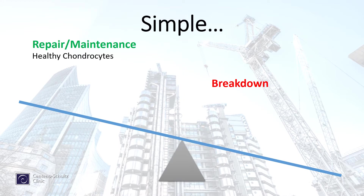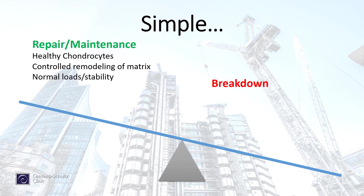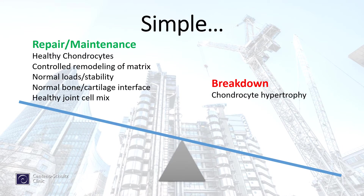For repair and maintenance, we need healthy cartilage cells, a controlled remodeling of matrix — meaning things are getting broken down and then rebuilt — normal loads and stability, a normal bone-cartilage interface, and a healthy joint mix. On the breakdown side, we can see inflammation that leads to bad cartilage cells and uncontrolled breakdown of the matrix, where the knee is literally eating itself alive.